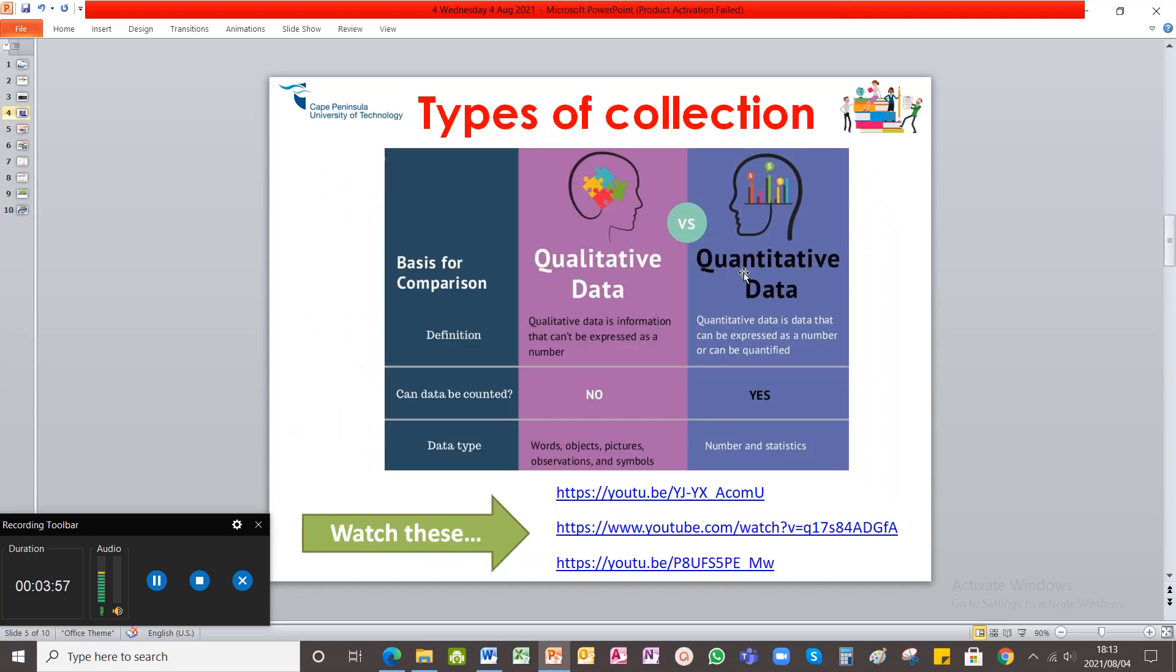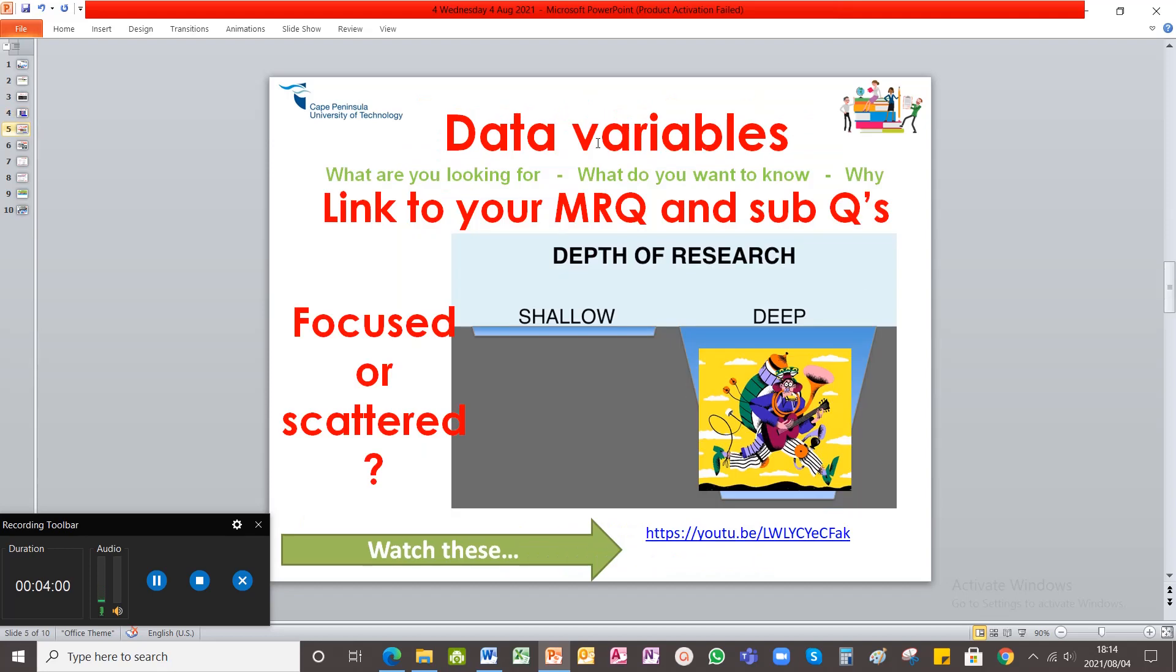Then when you are collecting your data, you will look at what is called variables or factors. What is it that you want to collect? What is it that you are looking for from your participants? So what are you looking for? What do you want to know? And why do you want to know it? So you're going to have to really think about the questions that you ask your participants. Now this will be linked to your main research question that you did in your first semester and your sub-questions that you did in your assignment of your first semester.